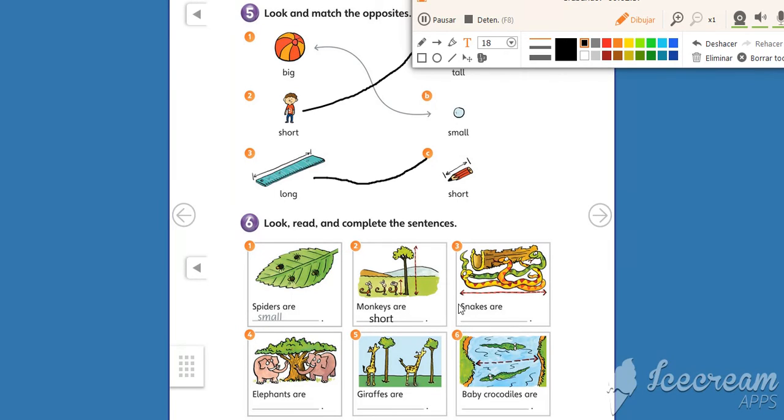Now, number three. What can you see, kids? Snakes. Wow. I don't like them. Do you like snakes, kids? The sentence is, snakes are what kids? Big, short, long, long. Very good, kids. Let's write the word. Okay? Long.